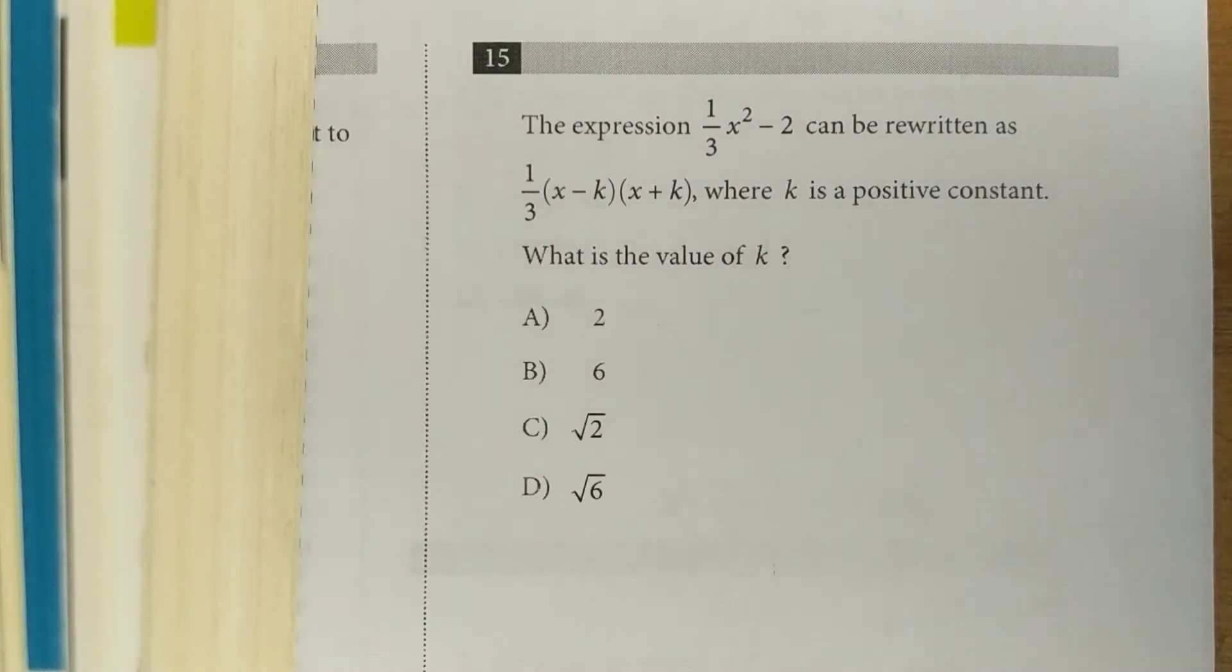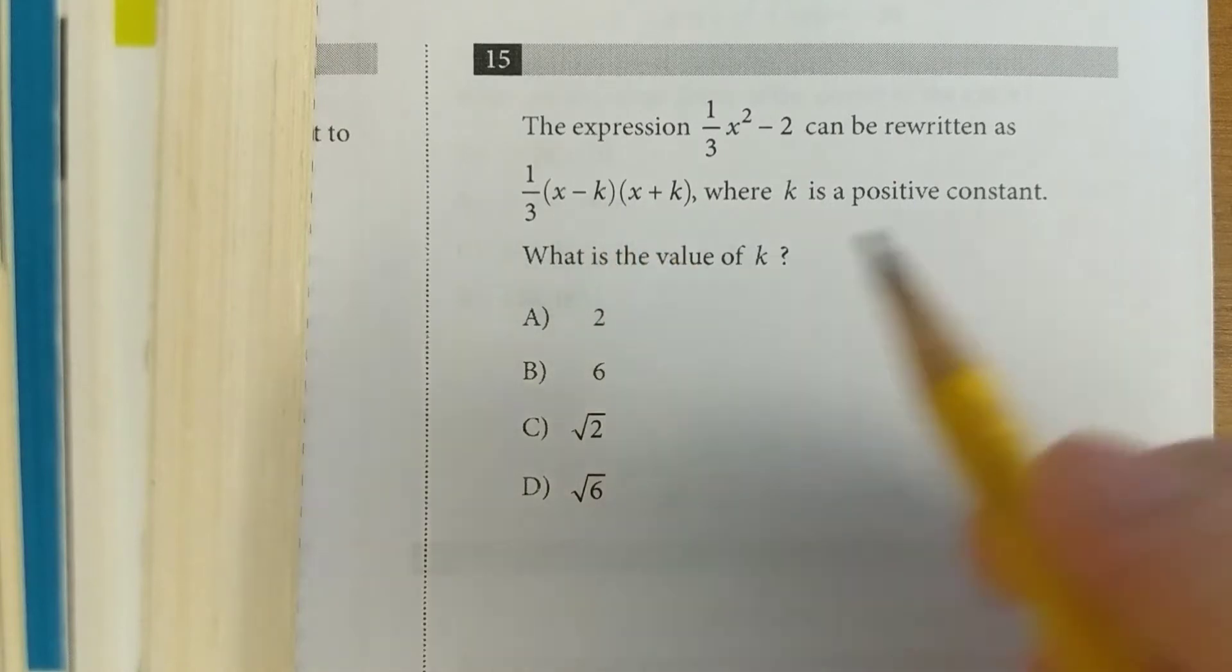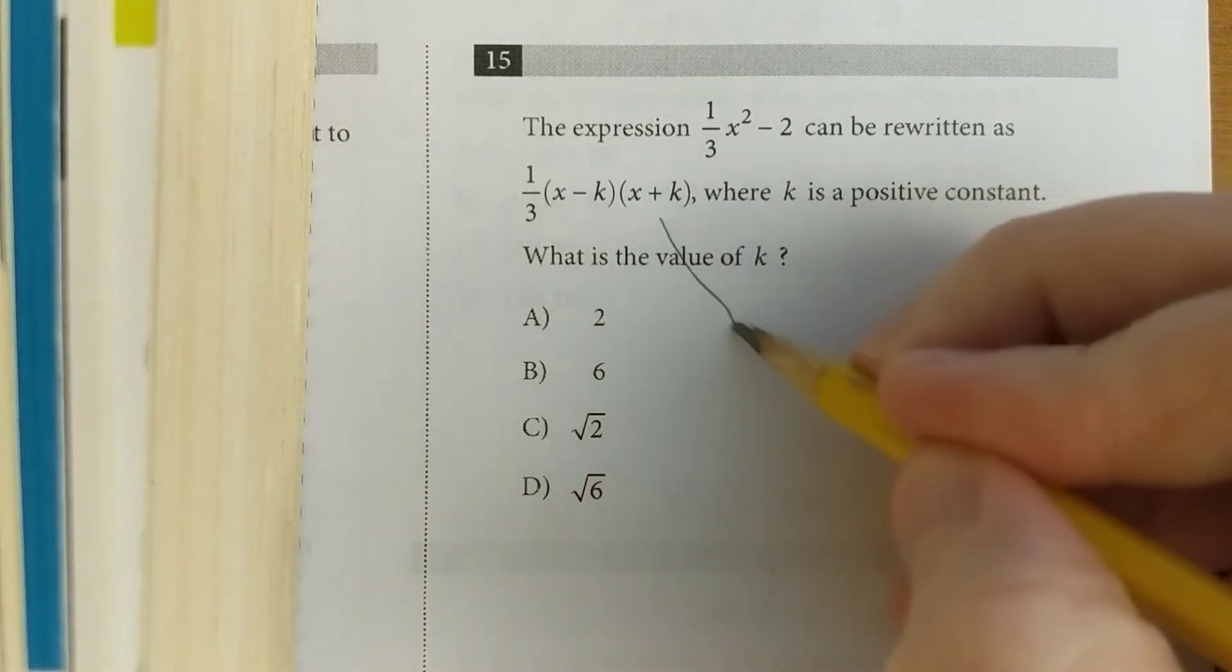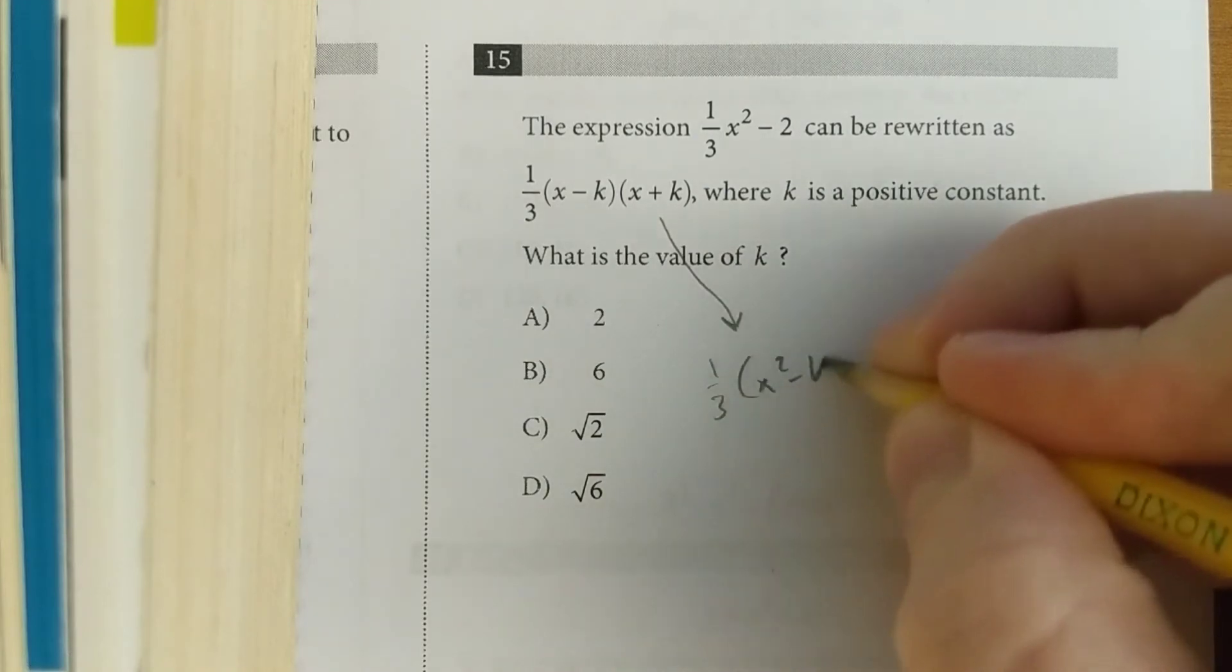Here's another difference of two squares problem. The tip-off here is that it says (x - k)(x + k). So you know that this is really the same thing as 1/3 times (x² - k²).